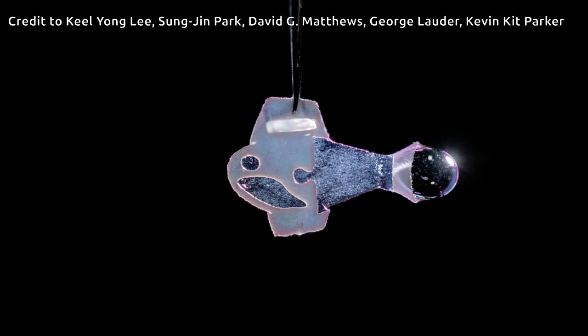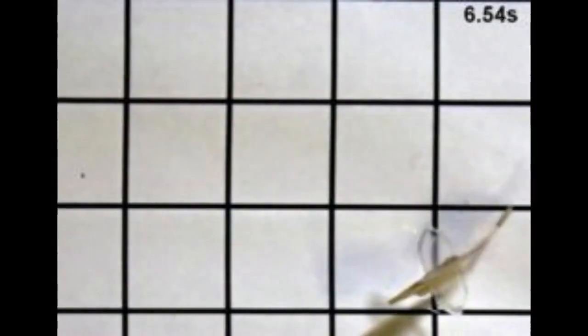The artificial fish swims by recreating the muscle contractions of a pumping heart, bringing researchers one step closer to developing a more complex artificial muscular pump and providing a platform to study heart disease like arrhythmia.